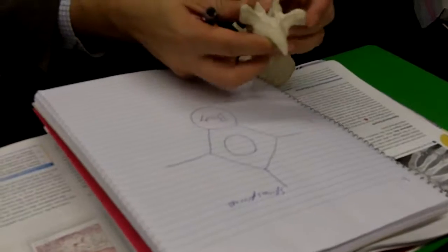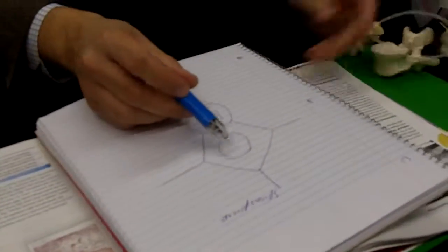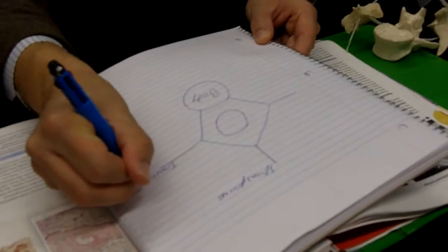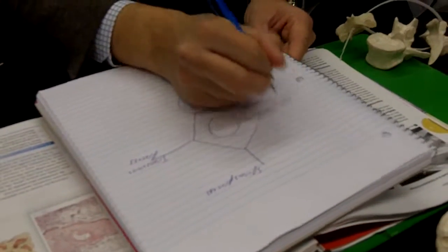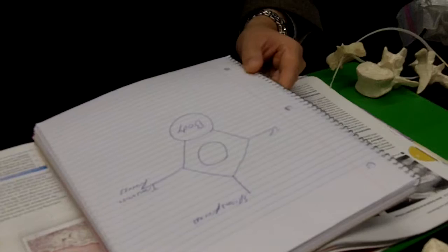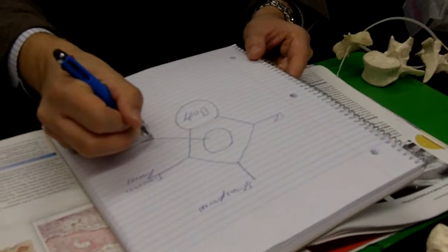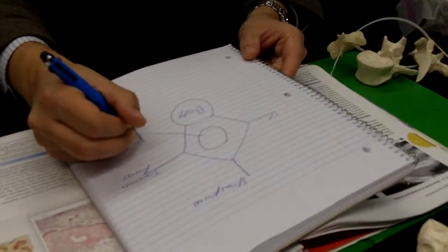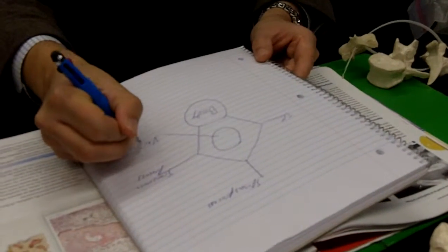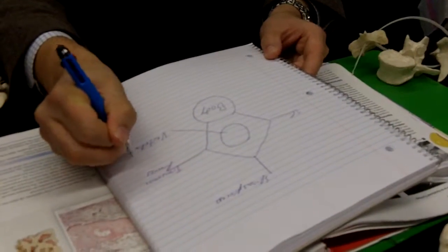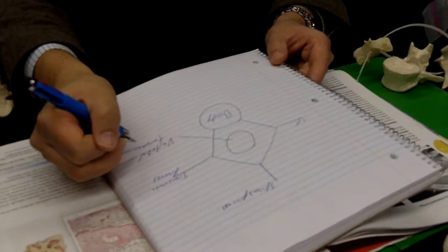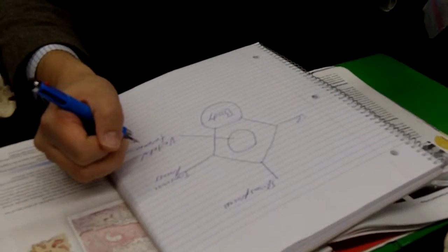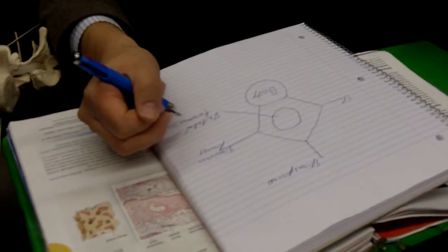Next, laterally, moving out, we have these right here — represented by these lines right here — and this is the transverse process. So I'm just going to write TP over here: transverse process. In the center, we have the hole. What is the hole called? Not transverse foramen — vertebral foramen. What is the only vertebra that has a transverse foramen? Cervical. And this is a thoracic. So we have vertebral foramen.